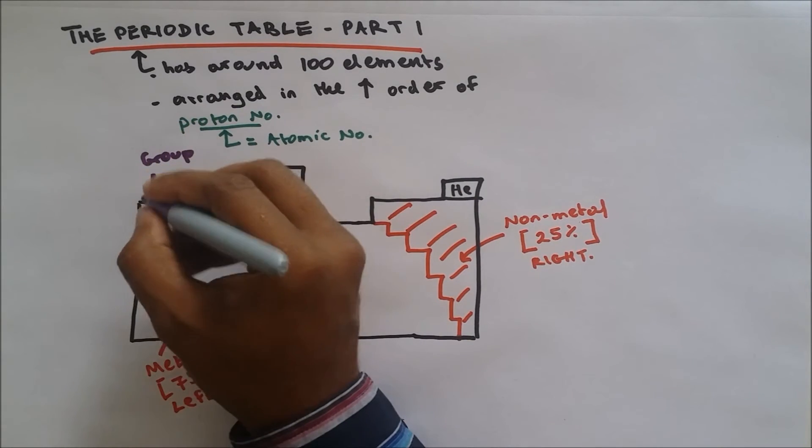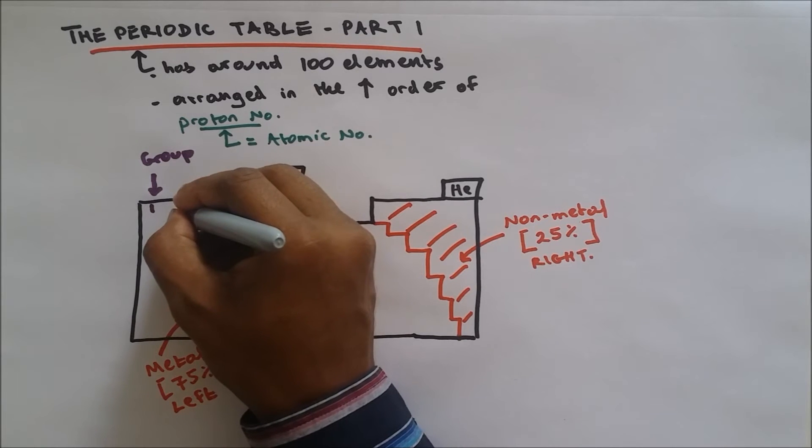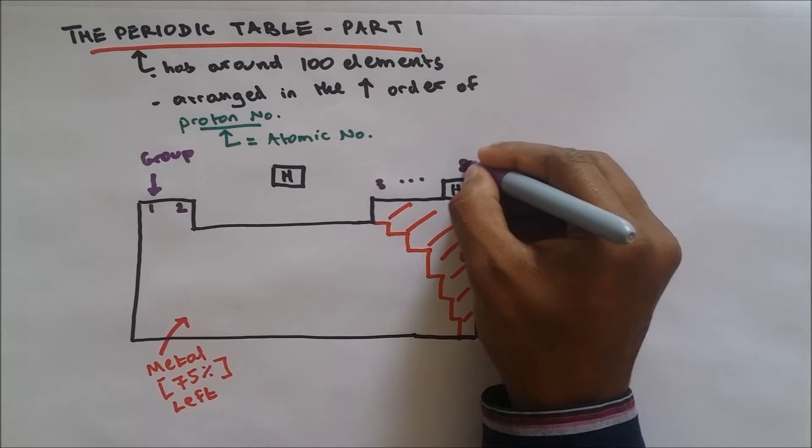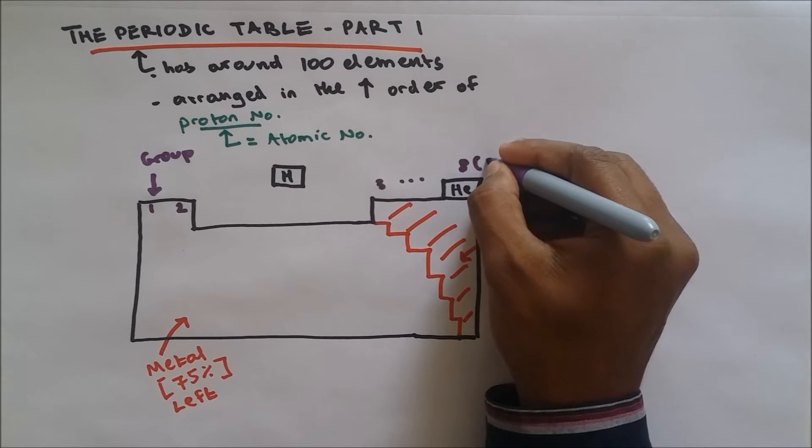This is group and groups are the columns. So we have group one over here, group two over here, group three and so on. It will go up to group eight. Group eight can be called as group zero.